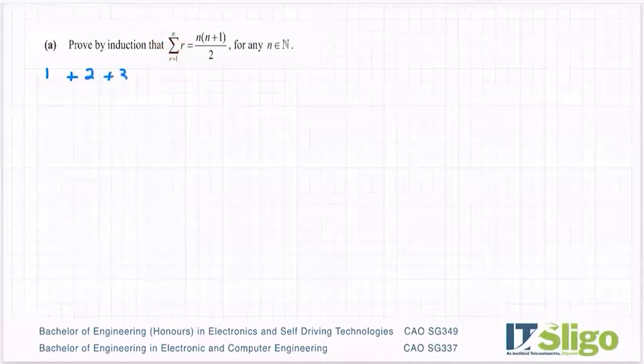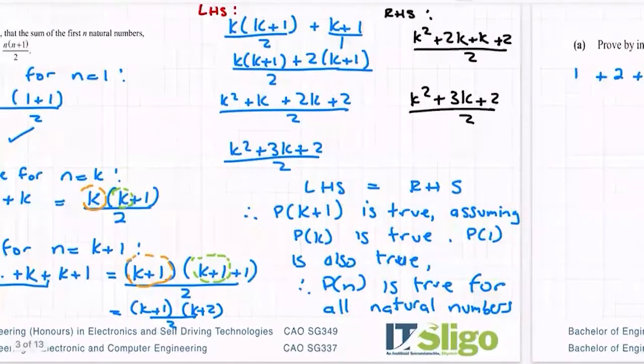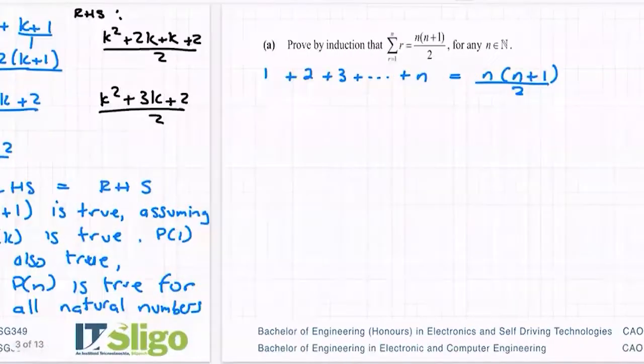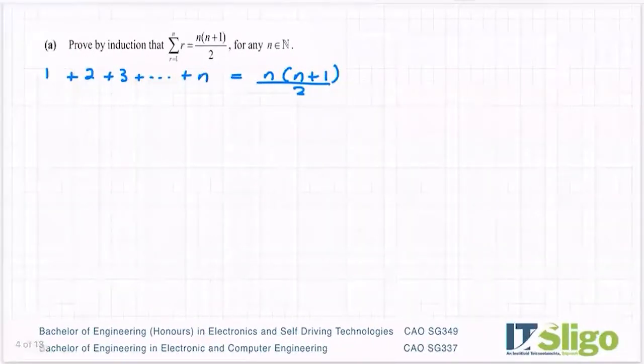So 1 plus 2 plus 3 plus dot dot dot up to n is equal to n times n plus 1 over 2 for any n a natural number. It's actually the exact same question that we did a few minutes ago, just written in a different format that may catch you out. So watch out for that sigma notation and watch out here that it's starting at 1.